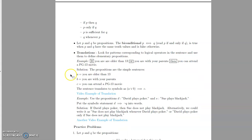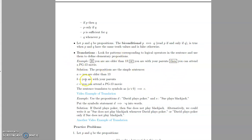One of the things you need to be able to do is translation — taking something written in words and turning it into symbols and vice versa. For example: 'If you're older than 13 or you are with your parents, then you can attend a PG-13 movie.' We let A be 'you're older than 13,' B be 'you're with your parents,' and C be 'you can attend a PG-13 movie.' Written in symbols: 'A or B' captures the first part, and the 'if...then' makes it an implication with an arrow pointing towards C, giving us (A ∨ B) → C.